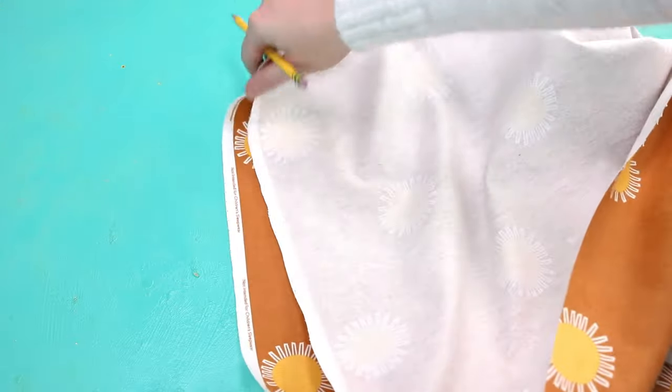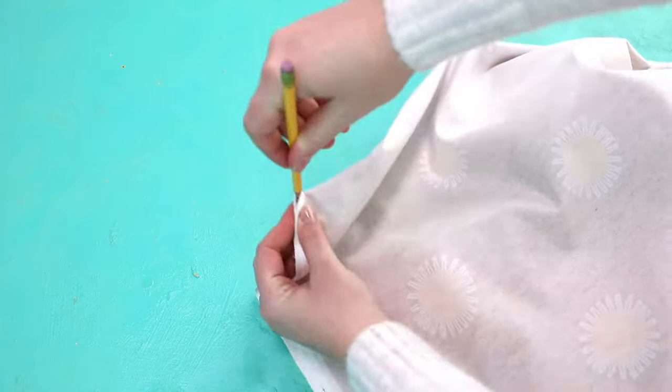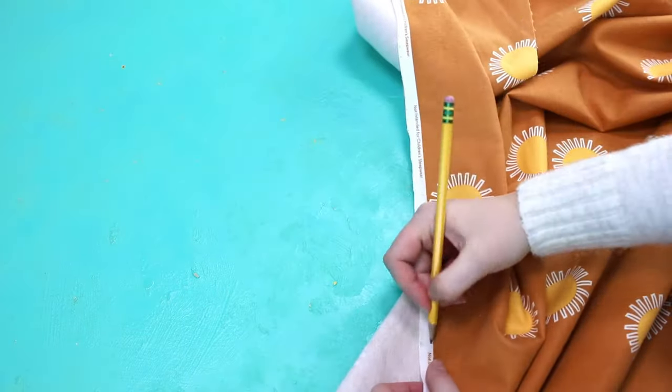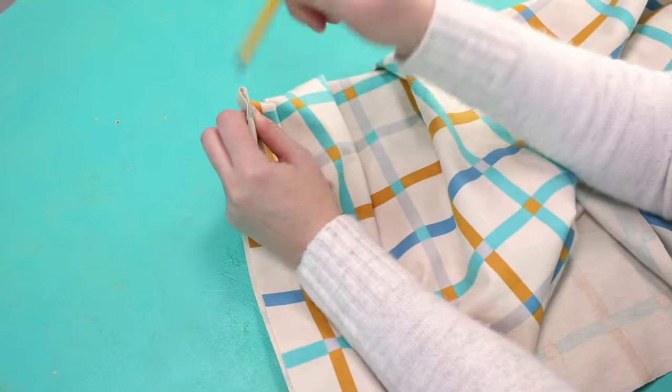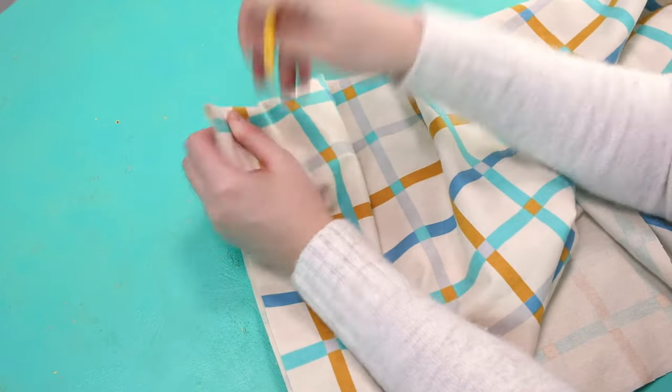Next mark the center of each side of the largest square on the front side of the fabric and mark the center of each side of the smallest square on the back side of the fabric.